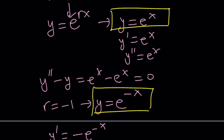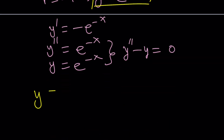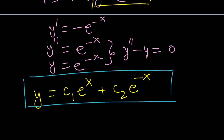We're going to take a linear combination of these two functions and write it as y equals c sub 1 times e to the x plus c sub 2 times e to the power negative x. Since e to the x satisfies the equation, any constant times that satisfies it, and same for e to the negative x. This is the homogeneous solution, y sub h. Now we're going to find a particular solution, y sub p.